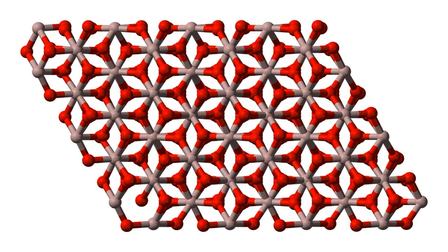It occurs naturally in its crystalline polymorphic phase alpha-aluminium oxide as the mineral corundum, varieties of which form the precious gemstones ruby and sapphire. Aluminium oxide is significant in its use to produce aluminium metal, as an abrasive owing to its hardness, and as a refractory material owing to its high melting point.